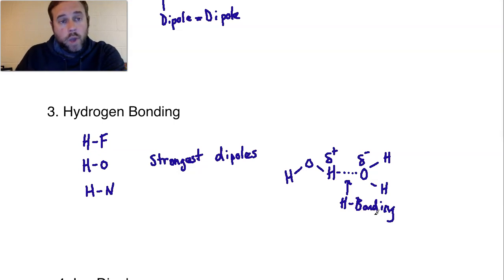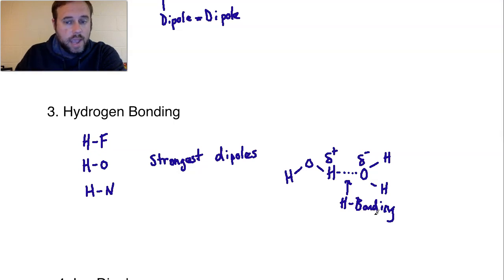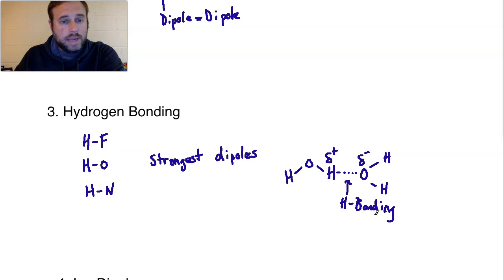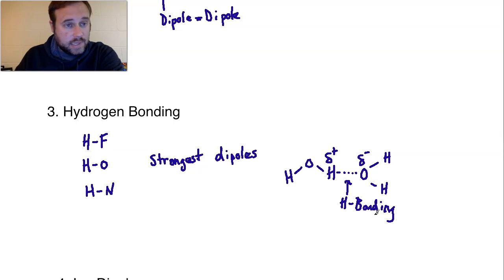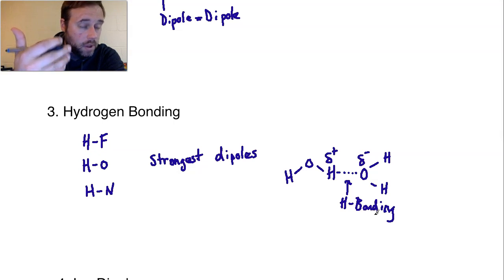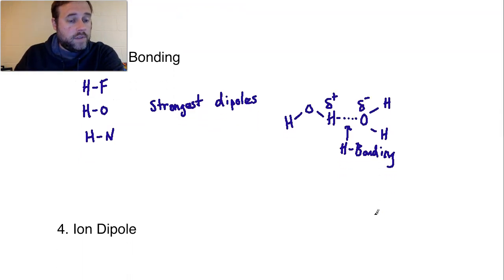Hydrogen bonding becomes especially important when you get into biochemistry, talking about amino acids, proteins, and nucleic acids. You want to talk about DNA — why A pairs with T and why C pairs with G — that's hydrogen bonding. They have hydrogen bonding partners that keep the double helix together through intermolecular forces. Van der Waals also becomes important, along with hydrophobic and hydrophilic interactions between the different components.